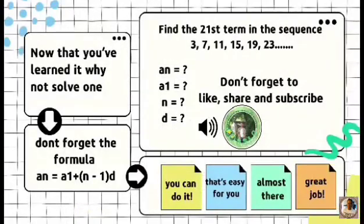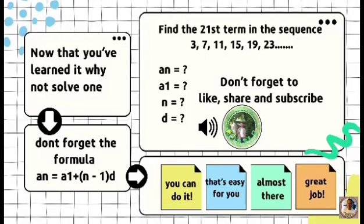Now that you've learned it, why not solve one? Find the 21st term of the sequence: 3, 7, 11, 15, 19, and 23. Don't forget to use the formula: a sub n is equal to a sub 1 plus the quantity of n minus 1 times the common difference.